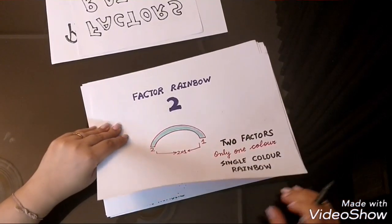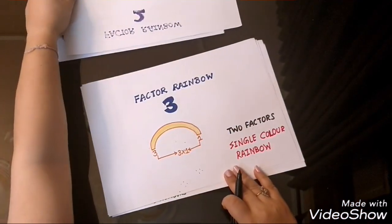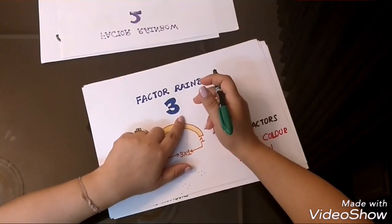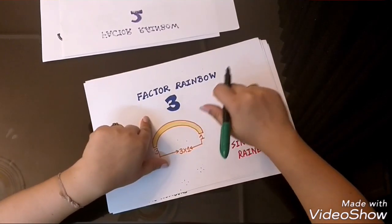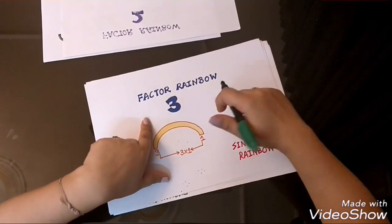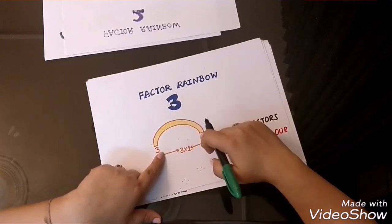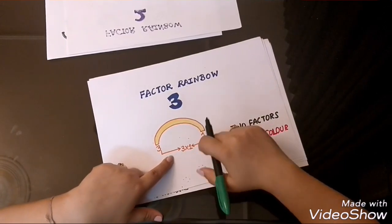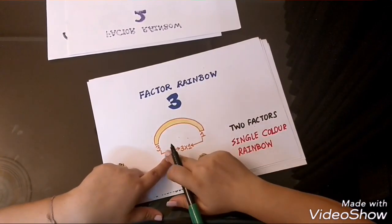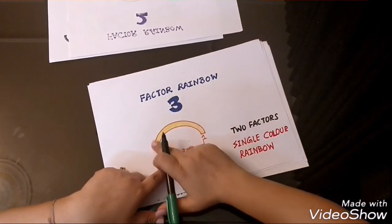Now, let's move to the next number that is 3. So, how many factors are there of 3? With which number I multiply the other number so that I get 3? 3 multiply by 1. I will get 3. There is no other combination available to us so that we can get 3.